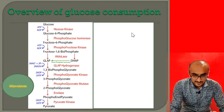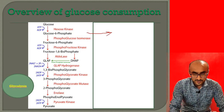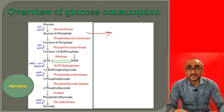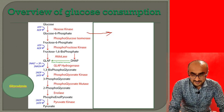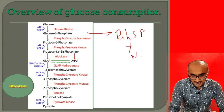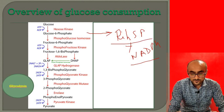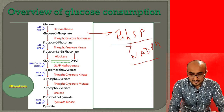In rapidly dividing cells, glucose-6-phosphate, instead of going through glycolysis, enters the hexose monophosphate pathway, also called the pentose phosphate pathway, where it is used to synthesize ribose-5-phosphate and NADPH. So this pathway is called the hexose monophosphate pathway, where ribose-5-phosphate and NADPH are the major products synthesized.